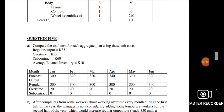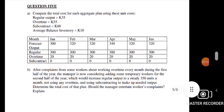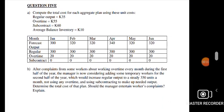This video is on question 5 of the poem assignment, specifically aggregate demand. I want to utilize this question to analyze how you can approach a question on aggregate demand. Part A says compute total cost for each aggregate plan using these unit costs — regular output, overtime, and subcontracting — and average balance of inventory is 10. Let's understand how we're going to create an aggregate plan.